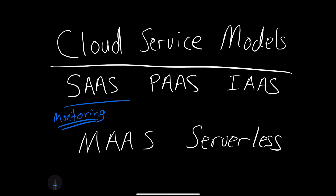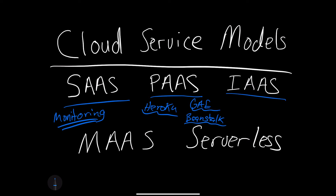Another cloud service model is Platform as a Service. Platform as a Service is about abstracting away the infrastructure so the application developer can focus on building applications. A good example is Heroku, which has been a common platform as a service for a long time. Google has GAE, or Google App Engine, and Amazon has Beanstalk. The core idea is that you as a developer pay a bit more and the cloud provider manages everything for you — almost like a full-service gas station fill-up versus doing it yourself.